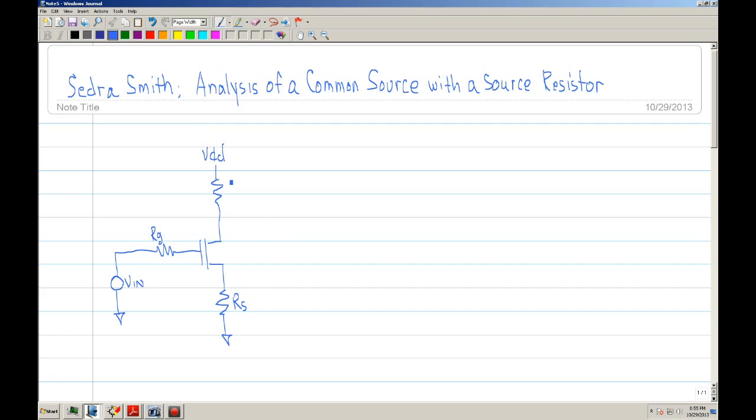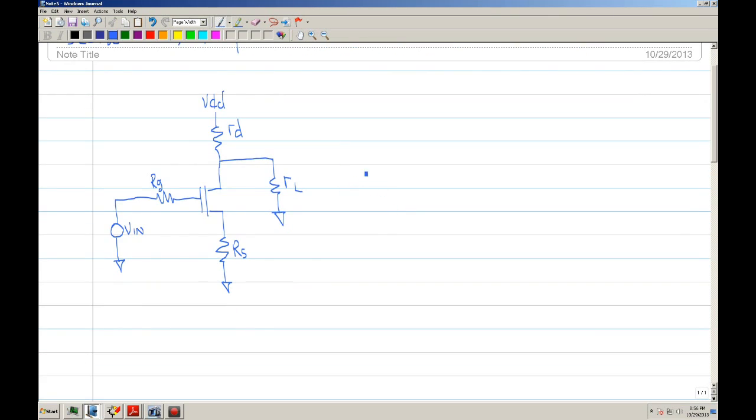Okay, so you're going to have a RD and let's go ahead and connect a load. We'll call it RL and this is a source resistor which is something new. Okay, so we can go ahead and draw the small signal model.